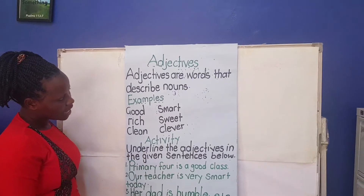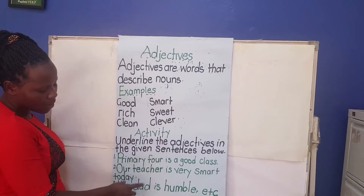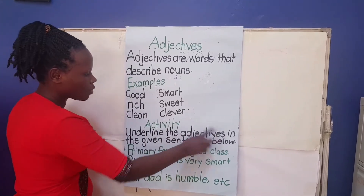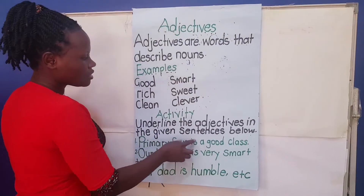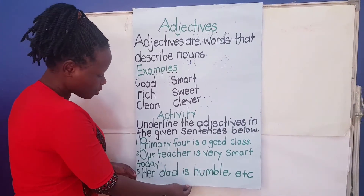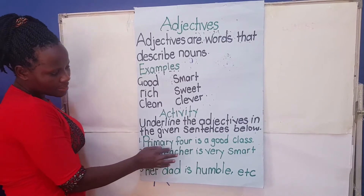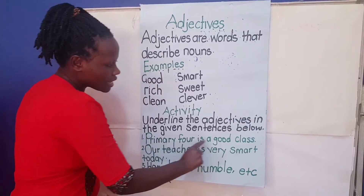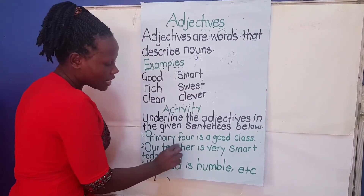So let us look at this activity. It is saying: underline the adjectives in the given sentences below. These are the sentences given to us — we have number one up to number three. In these sentences, there are adjectives. Read each sentence, find the adjectives, and underline them.